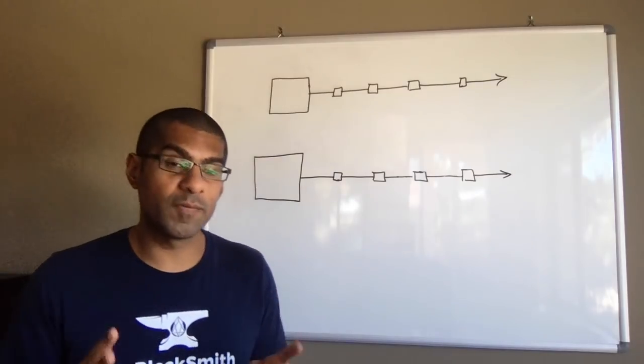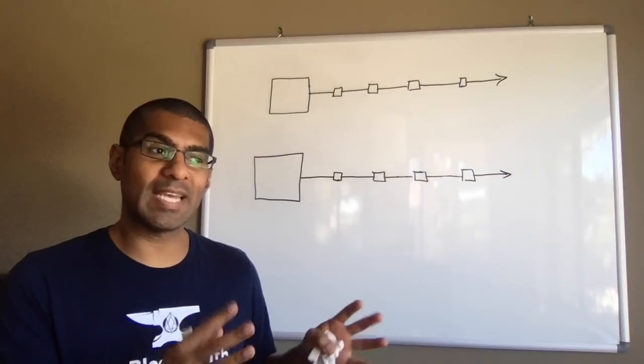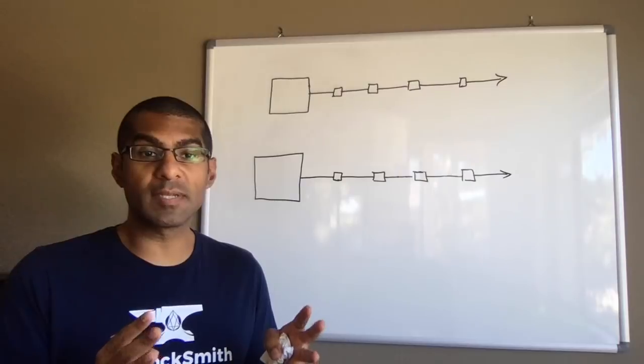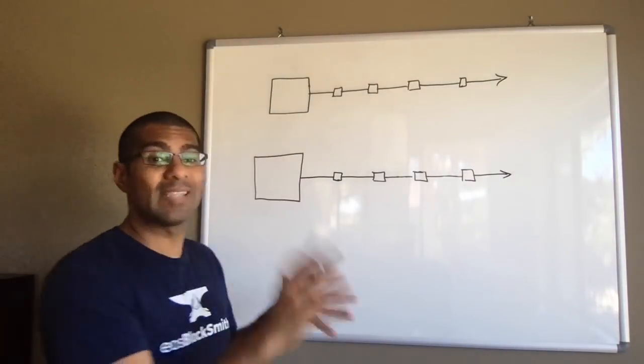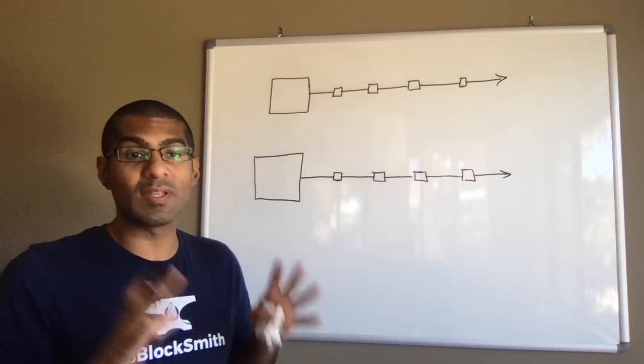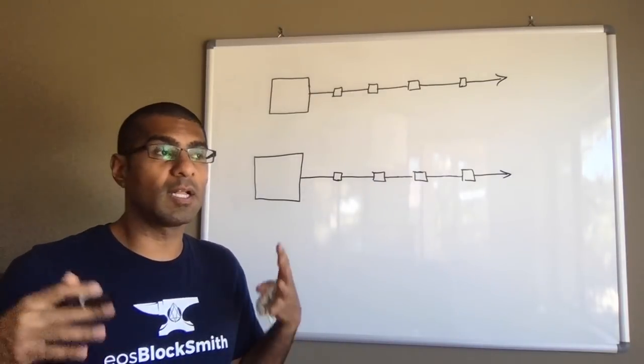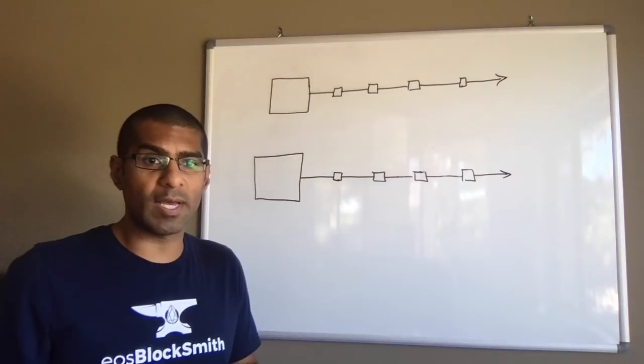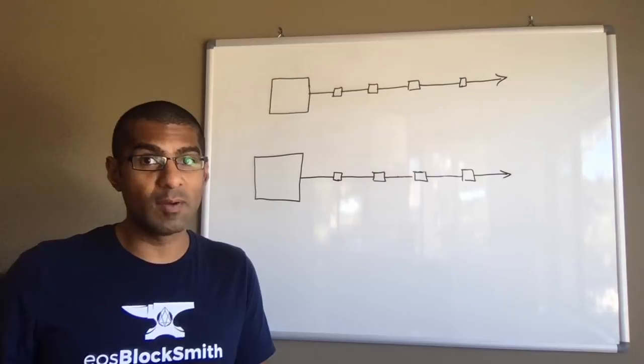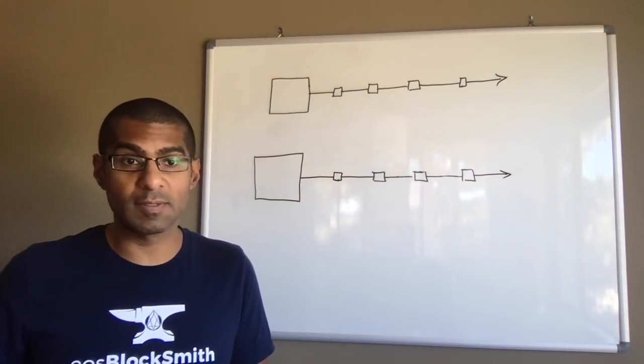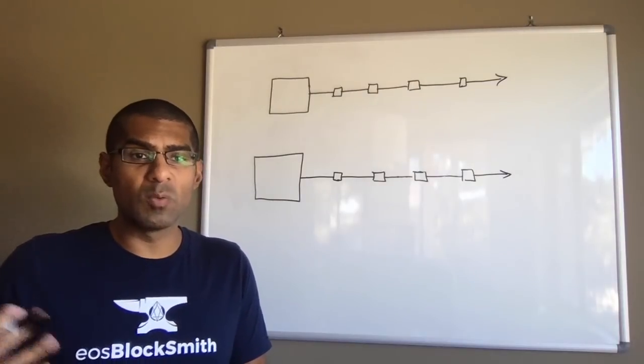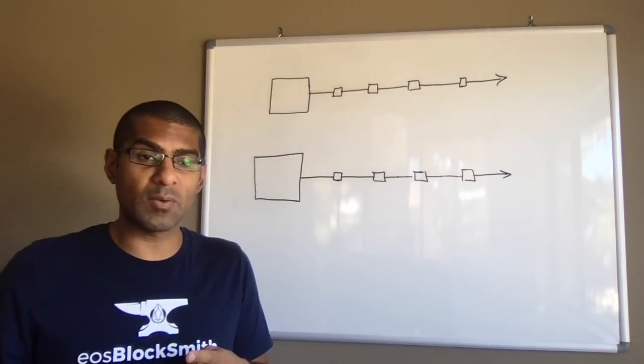Okay, a code fork is when one team takes the software code of a blockchain project and uses it to launch their own separate blockchain. Usually, they make some modifications to better suit their particular needs. A classic example of this is when Charlie Lee took the code for Bitcoin and created Litecoin with some small alterations. Most notably, he changed the block times from 10 minutes to 2.5 minutes, which makes Litecoin a little bit faster than Bitcoin to transact with.